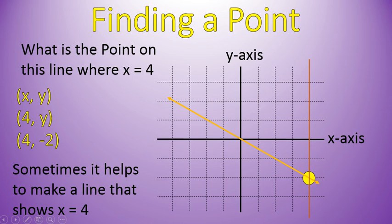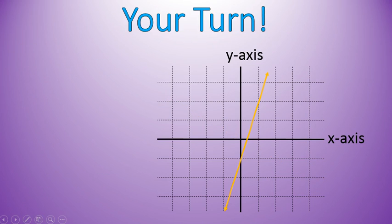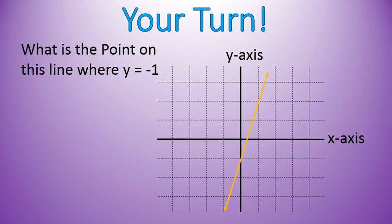Again, the point 4, negative 2. I want you to try one out. Here's the question for you. What is the point on this line where y equals negative 1? Your y value is equal to negative 1. Pause the video. Try and find that point. Or you can put your mouse over that point and see if it's the same point that I highlight here in a second.